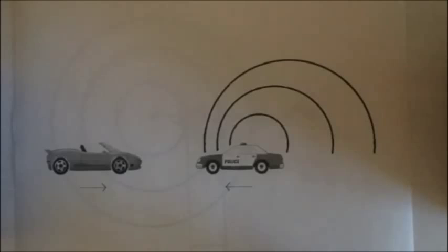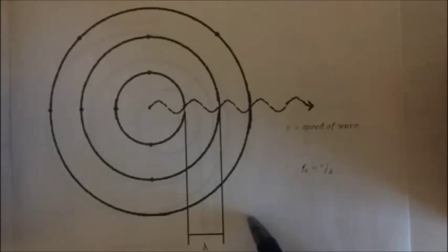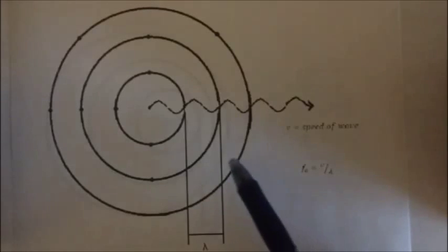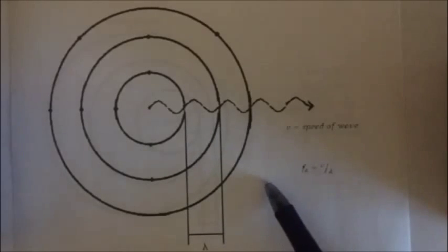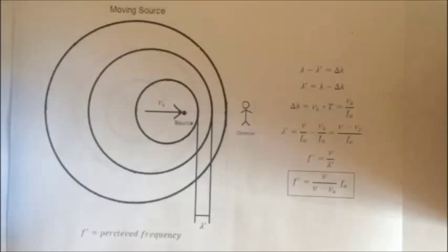To derive the Doppler effect, we have to first look at the two different situations that can occur and then put them together, the first being a moving source and the second being a moving observer. To start off, this is a diagram of a stationary speaker. Each line represents one wavelength, lambda, and the speed of the wave can be represented by V and the frequency by f0.